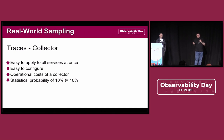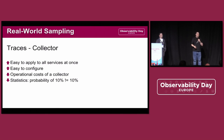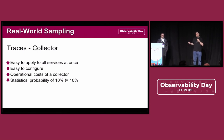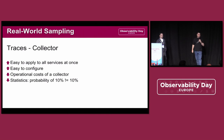It is easy to configure for all services at once — if all telemetry data goes to the same collector, we can centralize the configuration and tune based on current needs. It's relatively easy to configure but it does come with the operational costs of running a collector, which is not cheap — you have to install, deploy, maintain, and take care of it.